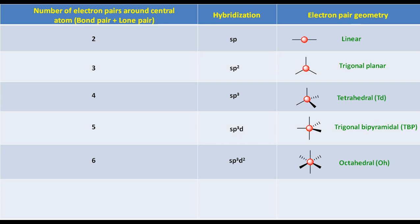Similarly, if there are seven electron pairs around the central atom, the hybridization will become sp3d3, and the electron pair geometry will be pentagonal bipyramidal.